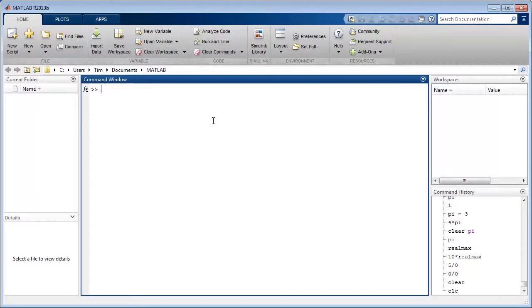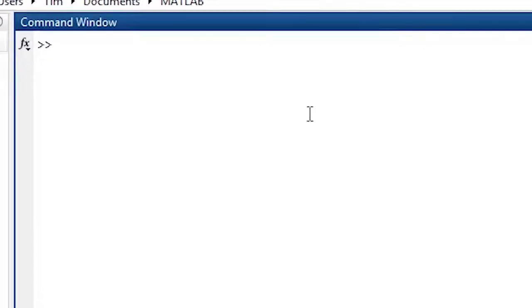Now let's do a few examples of using these operators. I can multiply two times five by typing two asterisk five and pressing enter. I get the same result when I type two dot asterisk five and press enter. Since the operands, the numbers two and five, are scalars or single numbers, there is no difference in what the two operators do.